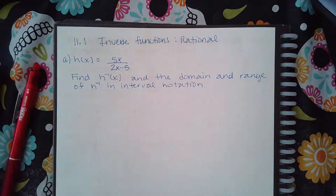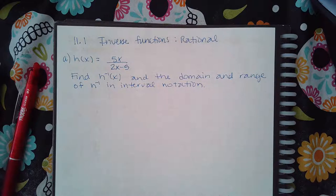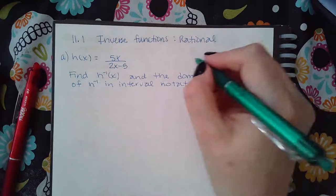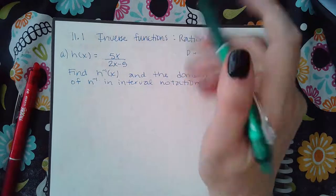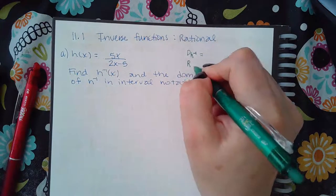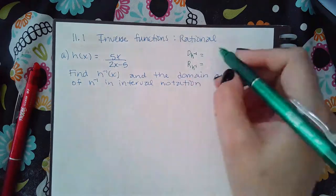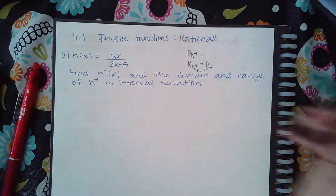Here we have the inverse of rational functions. These are a little bit hard because notice that there are two variables. When I interchange them, I'm going to have two y's, which is going to be a bit harder to solve. It says find h inverse and the domain and range of h inverse. Domains are easier to find, and ranges are harder to find. So what we'll do is actually find the domain of h first, and then we'll automatically know what the range looks like.